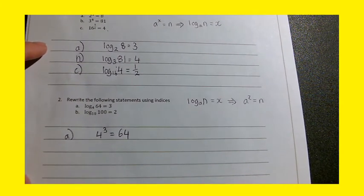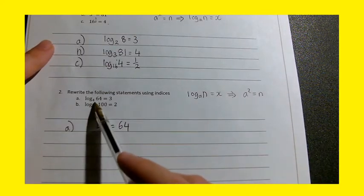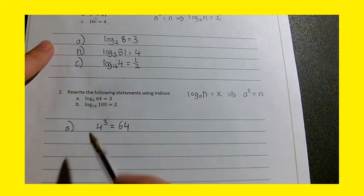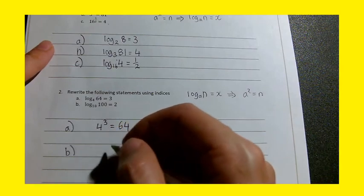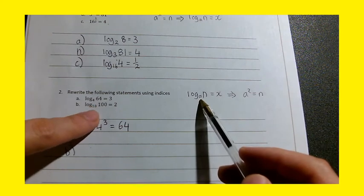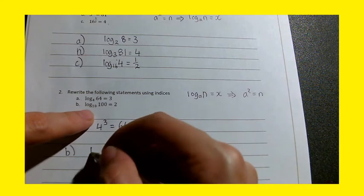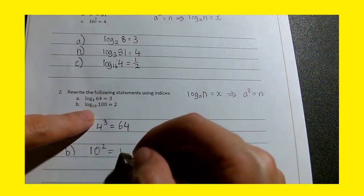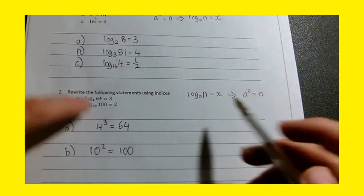4 cubed equals 64 can be rewritten as log base 4, 64 equals 3. So you always sort of read this as this number to the power of 3 gives you 64. Again, I've got log base 10, 100 equals 2. So my base is 10. My n is 100. And this is 2. So I'm going to have 10 squared equals 100. The base was a. So 10 squared equals 100.